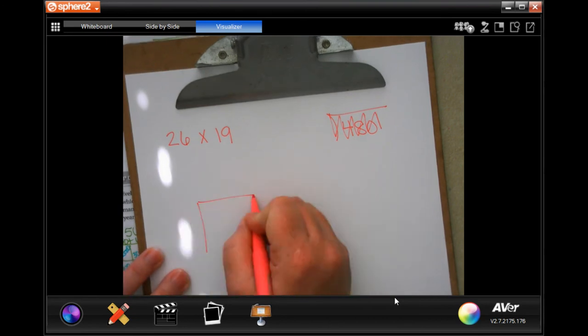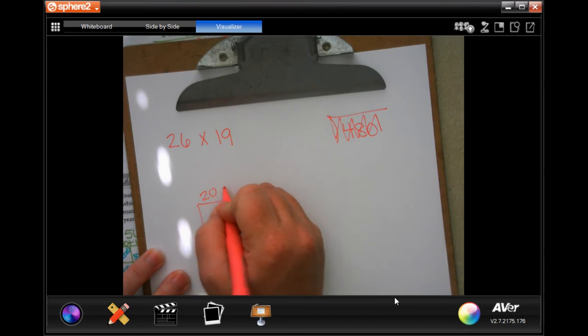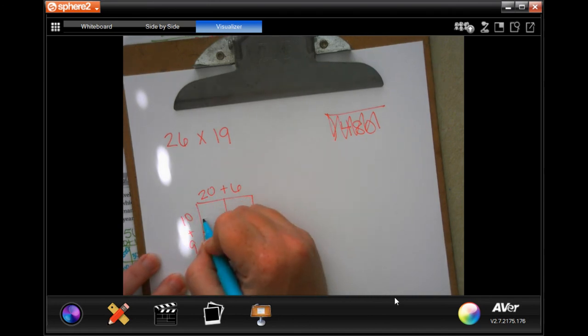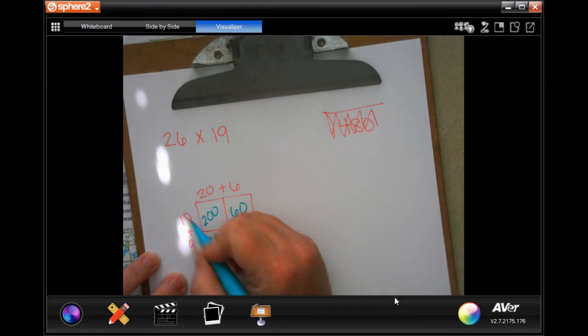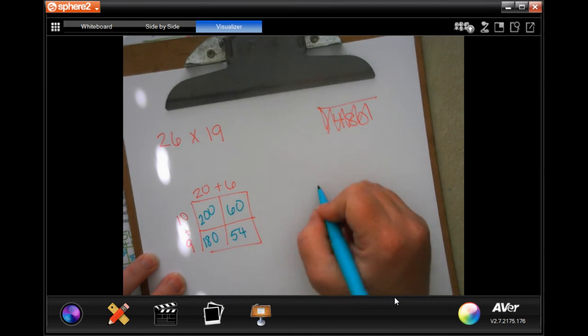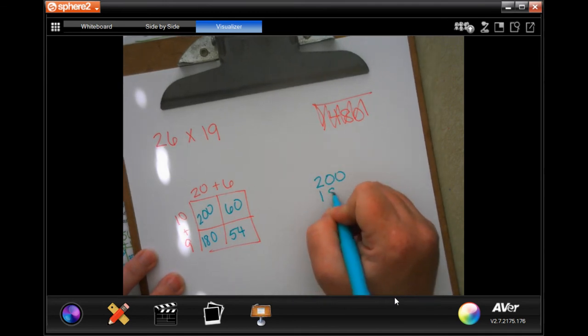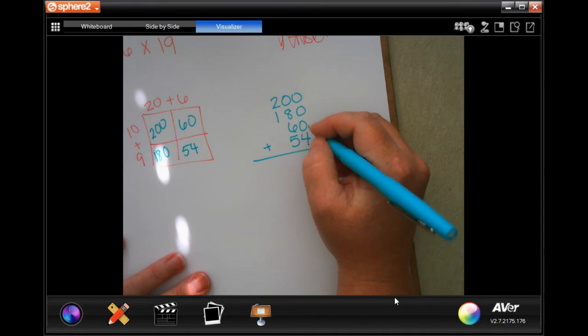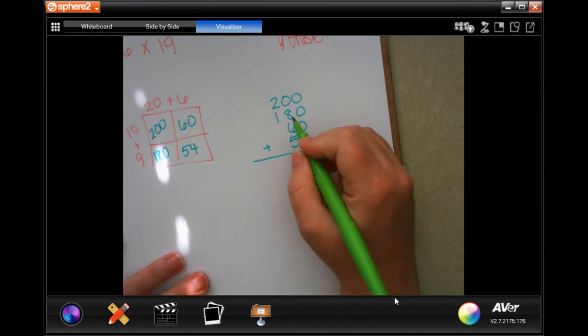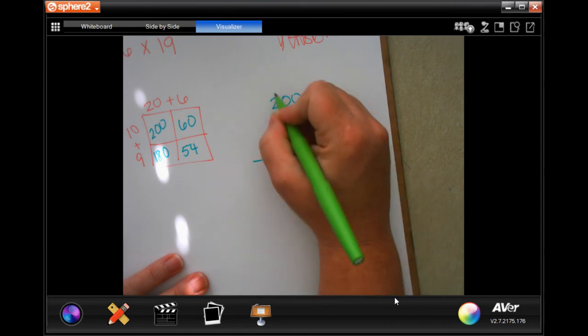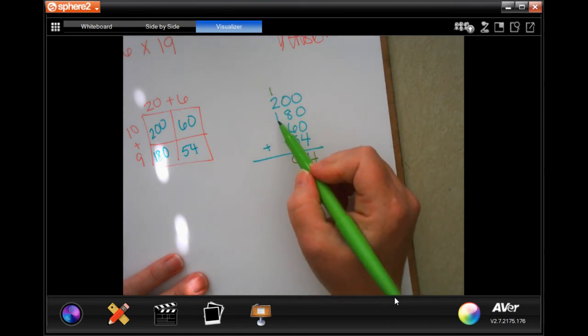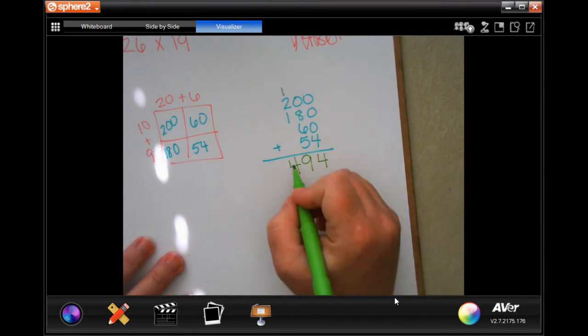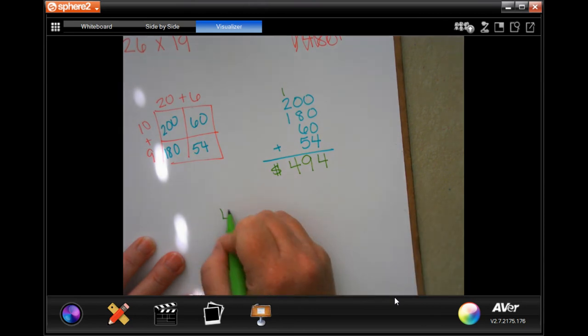26 dollars for 19 members. And then we need to know if $480 is enough. Actually, we don't even have to do this. We can just subtract if we need to. I'm going to draw my box. I'm going to put 20 plus 6 and 10 plus 9. 10 and 20, 2 with 2 zeros. 60. 18 with a 0. And 54. I'm going to come over here and line those up. Going all the way down. 4. 8 plus 6 is 14, plus 5 more is 19. Carry your 1. 1 plus 2 is 3, plus 1 more is 4. So I would need $494, and I only have $480.